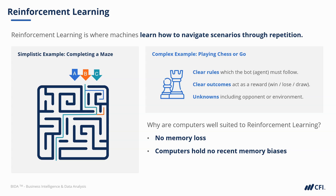Computers do not hold these biases. Finally, computational superiority. Training yourself to recognize patterns over a million repetitions is no mean feat. There's no way humans could remember and calculate statistical parameters over so many games. But computers can solve the computational problem and consequently learn from vast data sets. Reinforcement learning is an area of research taking on more and more complex tasks.